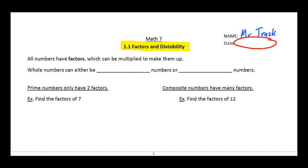Okay, so we're looking at factors. You guys have seen factors for a couple of years now, and just a reminder that all numbers have factors, which are numbers that you can multiply together to make them up. So whole numbers can either be prime numbers or something called composite numbers.